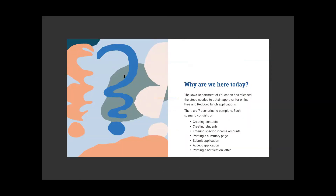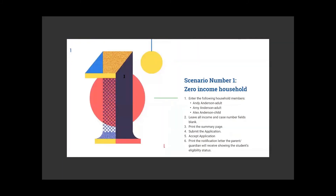The Iowa Department of Education has released the steps needed to obtain approval for online free and reduced lunch applications. There are seven scenarios to complete. Each scenario consists of creating contacts, creating students, entering specific income amounts, printing a summary page, submitting the application, accepting the application, and printing a notification letter. Those are seven different income scenarios. We're going to go through each one today. Here are some helpful tips to get you started.